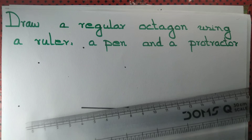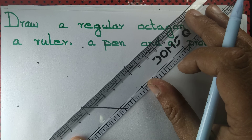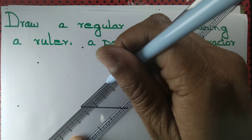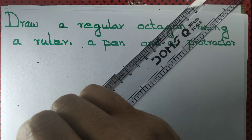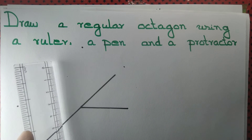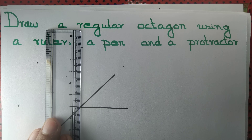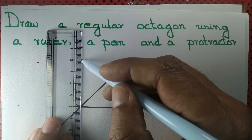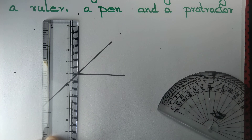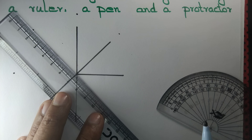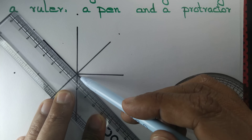Next, we use a scale to draw a line segment that measures 4 cm each. We draw 4 cm at an angle of 45 degrees, and we also draw it backward 4 cm at 45 degrees. Again, 4 cm at an angle of 90 degrees — we draw a line segment that measures 4 cm and extend it by another 4 cm. Again, we draw a line segment that measures 4 cm at an angle of 135 degrees and extend it further by another 4 cm.